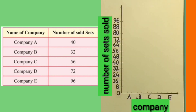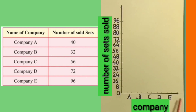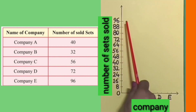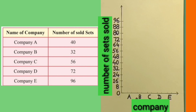On the vertical side of this bar graph, I have written number of sets sold, whereas along the horizontal side, I have written company. On the vertical line, I have represented the data at a scale of 8. On the horizontal line, I have written the names of companies A, B, C, D, and E.